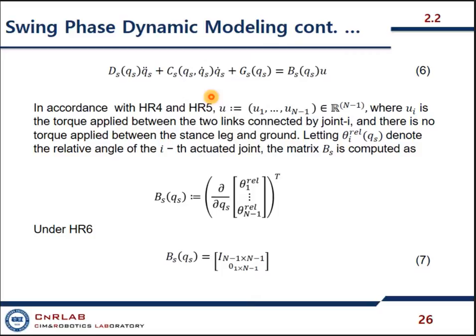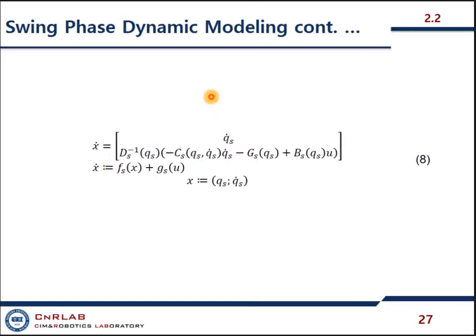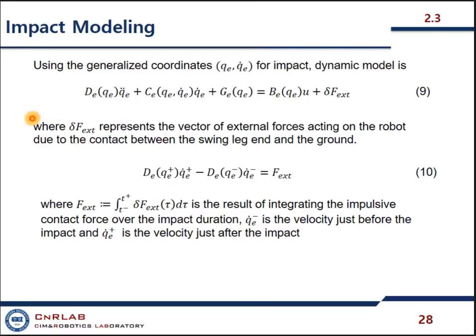Swing phase dynamic modeling I have already discussed in my previous presentation, so I would skip it. Impact modeling will be my today's main emphasis. This is the main equation: it combines our inertial, Coriolis, and gravitational matrices, a matrix which is multiplied with torque. It can be gains or something like that. And this is the external applied force as input. We are going to have this basic dynamic modeling equation.